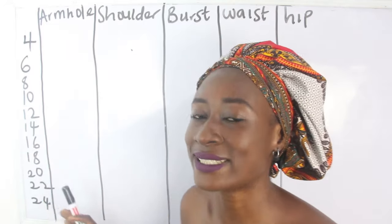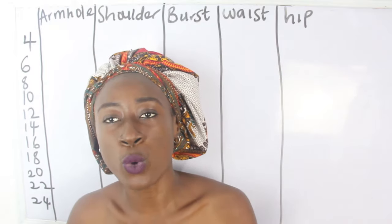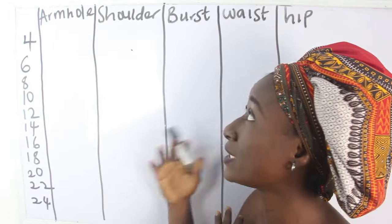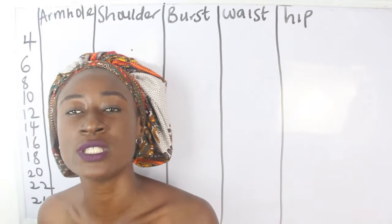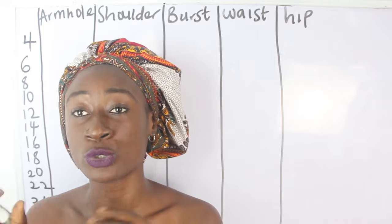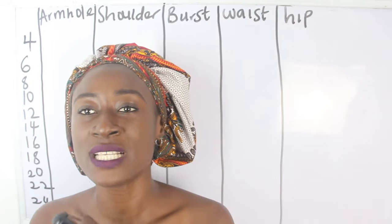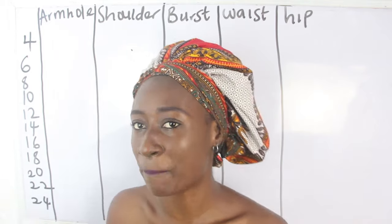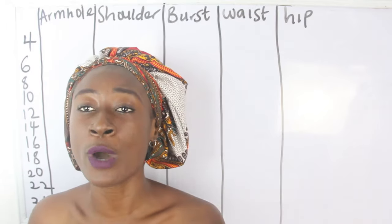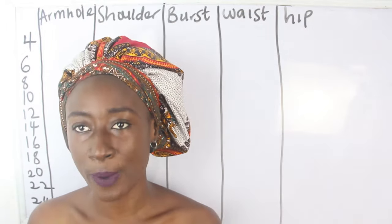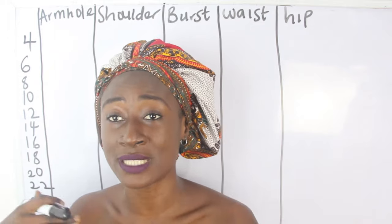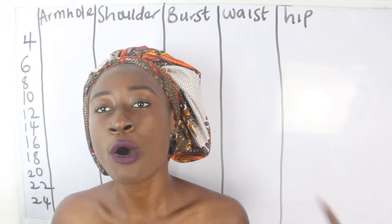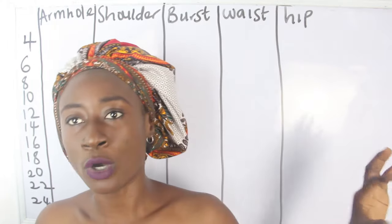How will you know what is your size — like, what size do you fall under? When we calculate the bust measurements, the waist, and the hip, you'll be able to get where your size falls. Also note that you can fall between two sizes. Your bust measurements can be a size 8 and your hip measurements can be a size 12, simply because some people are bigger on the lower side compared to the upper side, and vice versa.